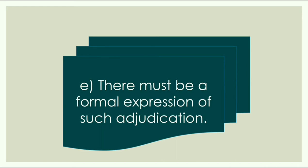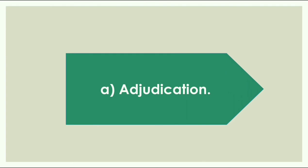Now let us understand each element one by one. The first element is adjudication. To constitute a decision of a court to be a decree, there must be an adjudication, that is a judicial determination of the matter in dispute, which is nothing but a judgment. If there is no judicial determination of any matter in dispute, it is not a decree. A decision on a matter of administrative nature, or an order dismissing a suit for default of appearance of parties, or dismissing an appeal for want of prosecution cannot be termed a decree, as they do not judicially deal with the matter in dispute. Further, such judicial determination must be by a court; thus, an order passed by an officer who is not a court is not a decree.